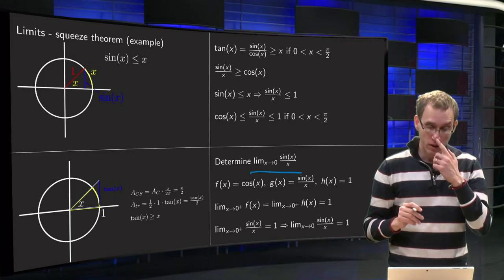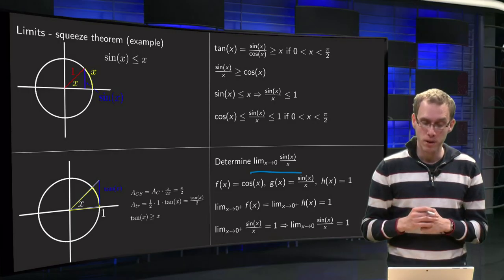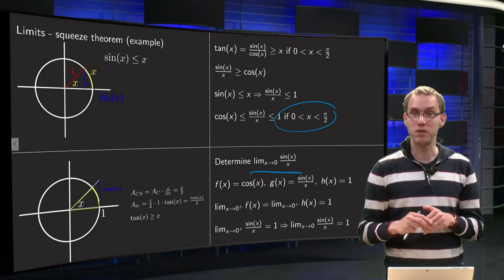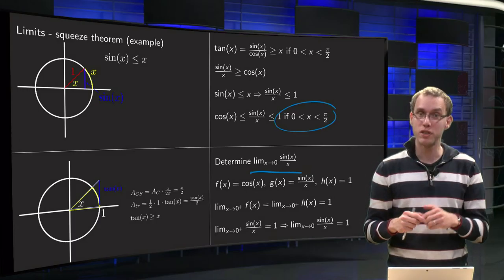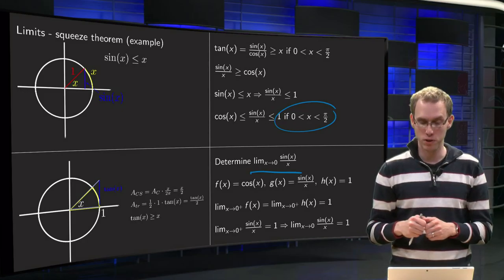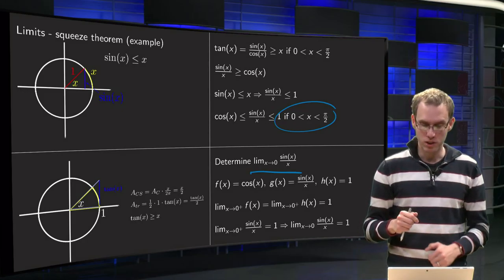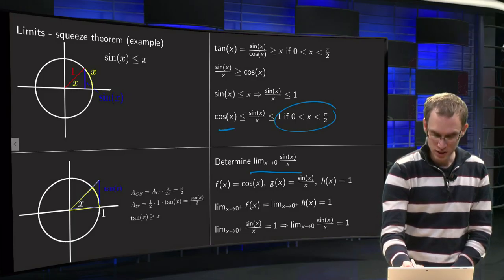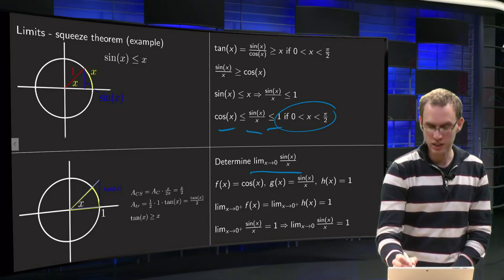We can use symmetry to get this to work also for negative x because the expression sine of x over x is symmetric plus minus x. So we can use as our functions f equals cosine x, g equals sine x over x and h equals 1.